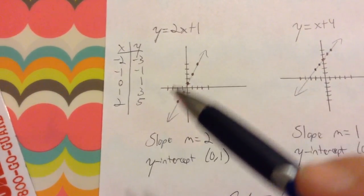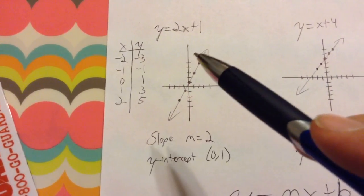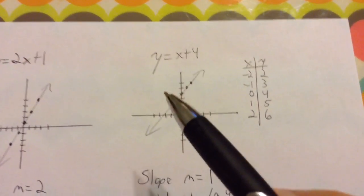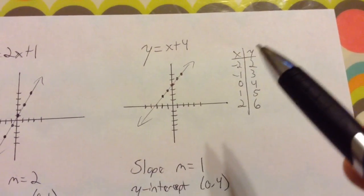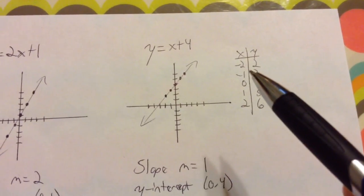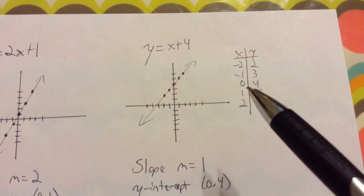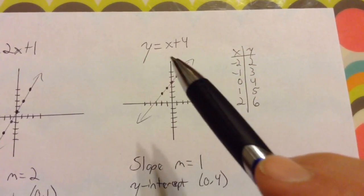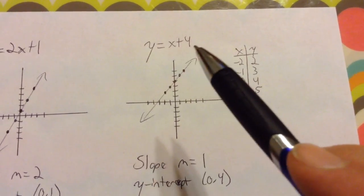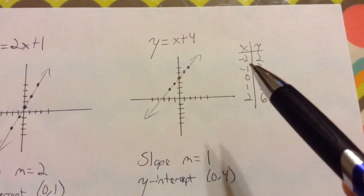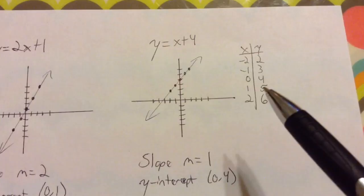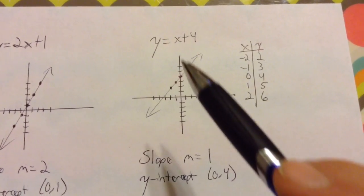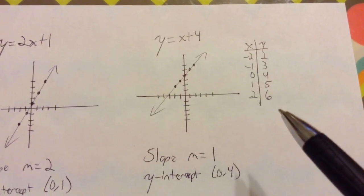After you connect your dots, there's your line. For y equals x plus 4, same thing — you make a table of values: negative 2, negative 1, 0, 1, and 2. When you plug in negative 2, negative 2 plus 4 is 2. Then 0 plus 4 is 4, and 2 plus 4 is 6.